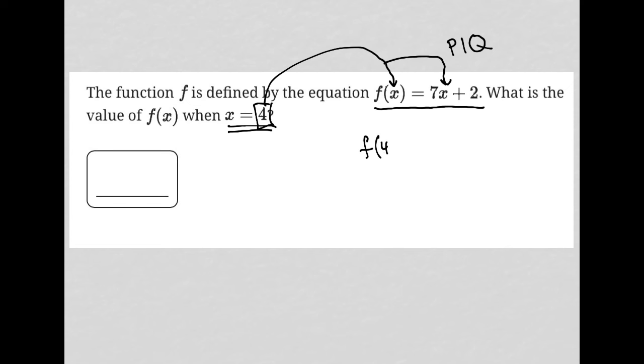we get f of 4 is equal to 7 times 4 plus 2. 7 times 4 is 28, 28 plus 2 is 30. And therefore, the correct answer here is 30.